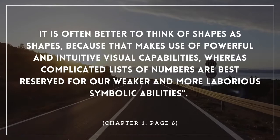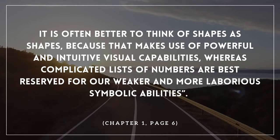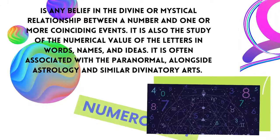Yet he wrote that it is often better to think of shapes as shapes, because that makes use of the powerful and intuitive visual capabilities, where a complicated list of numbers is best reserved for a weaker and more laborious symbolic ability. That's actually quite good.